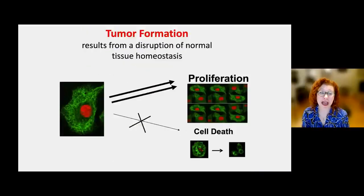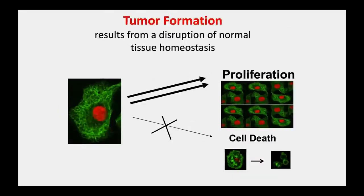When mutations disrupt these safeguards and we have too much cell proliferation, tumor formation results. A tumor forms as a result of a disruption of normal tissue homeostasis—too much cell proliferation and little or no cell death, with the net result being too many cells.